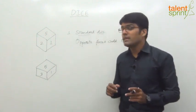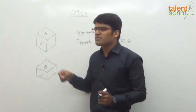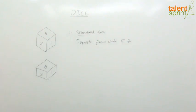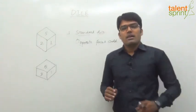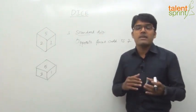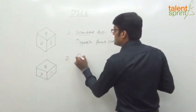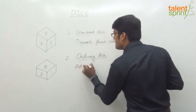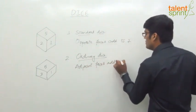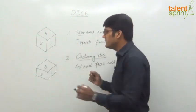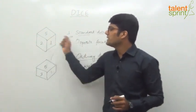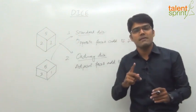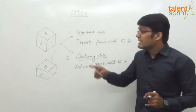Now if you look at the first example here, it is not a standard dice because adjacent faces are adding to 7 — 5 plus 2 is 7. So you cannot say that it is a standard dice. The other type is an ordinary dice, where adjacent faces add to 7. There will be one pair of adjacent faces which will always add up to 7, so such a dice is called an ordinary dice.